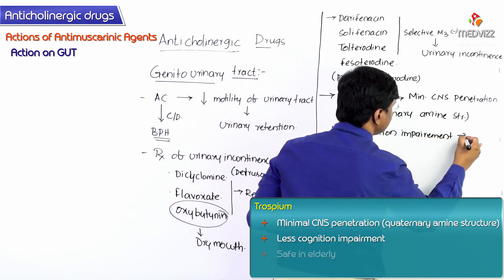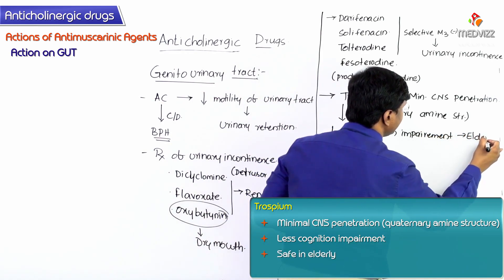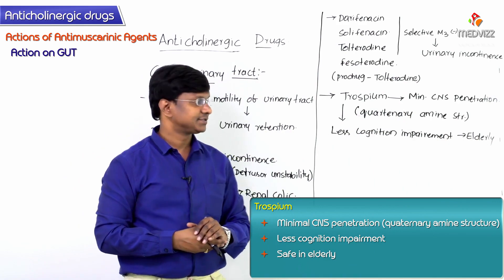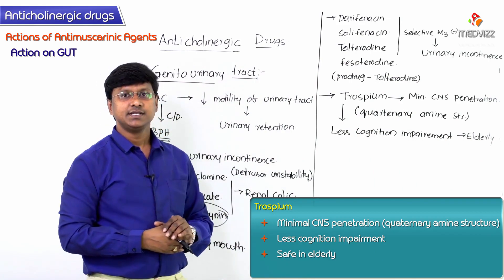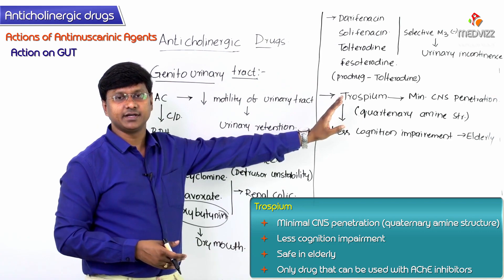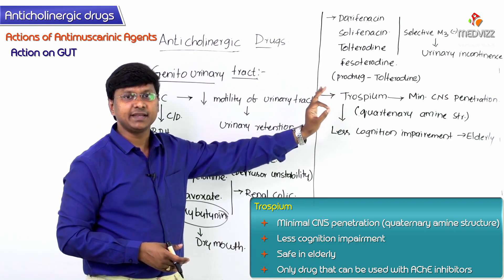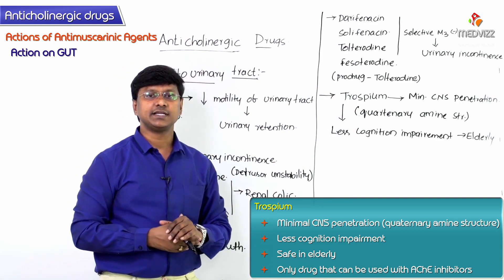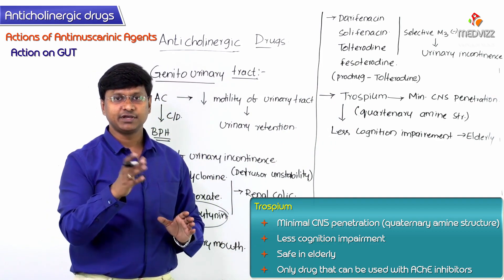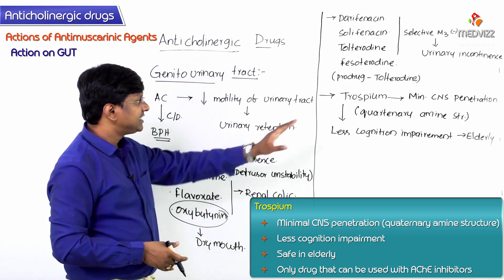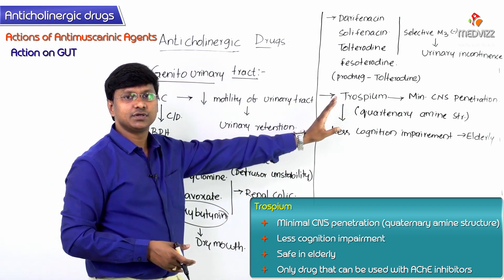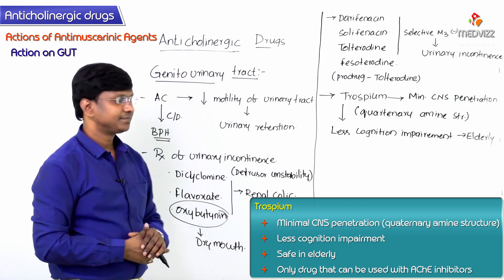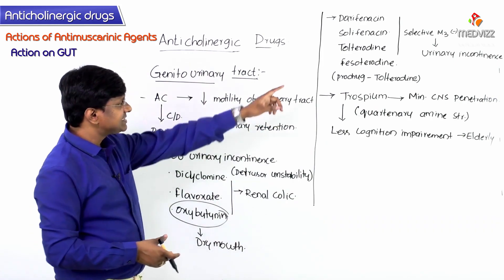Because Trospium has minimal CNS penetration and causes less cognitive impairment, it can be used safely in elderly individuals. It is also the only drug from this group that can be used along with acetylcholinesterase inhibitors.